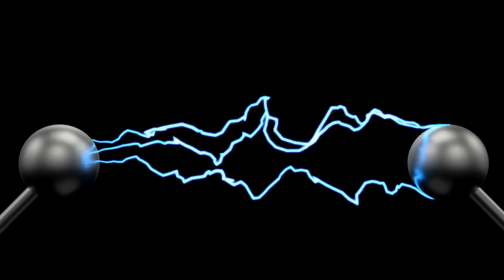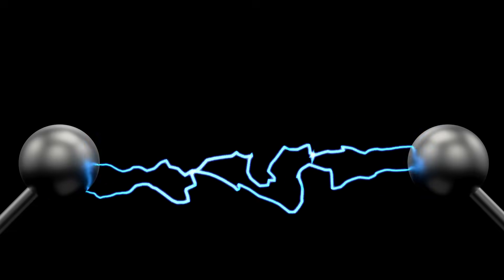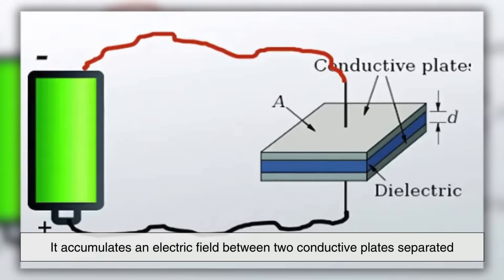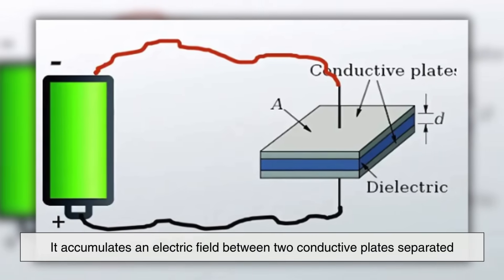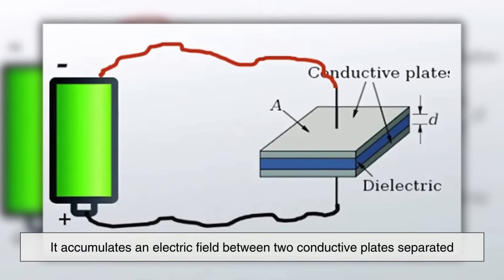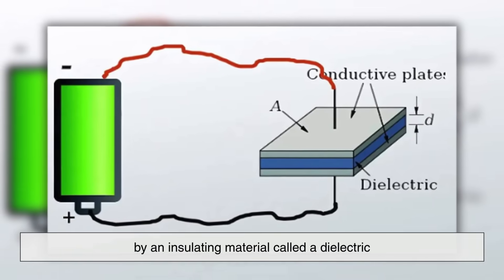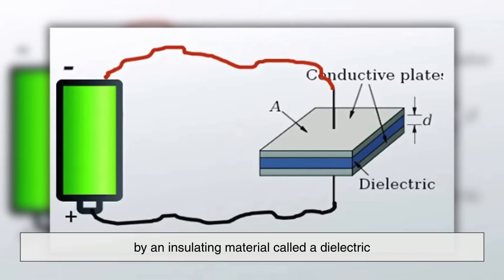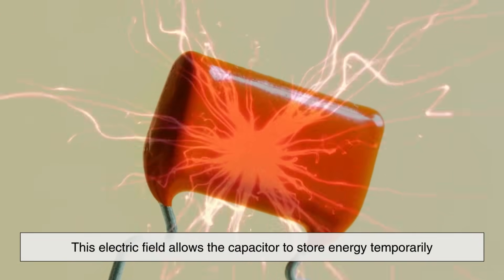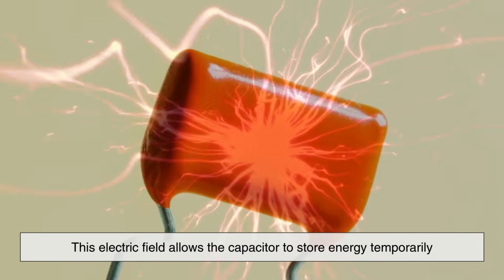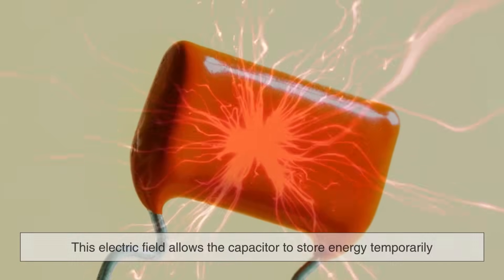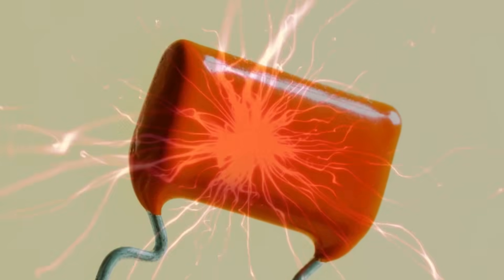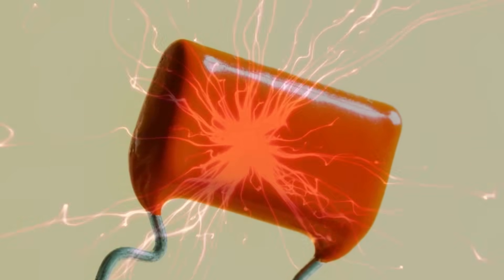When voltage is applied across its terminals, it accumulates an electric field between two conductive plates separated by an insulating material called a dielectric. This electric field allows the capacitor to store energy temporarily, ready to be released when required.